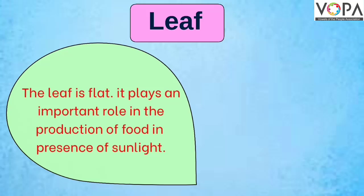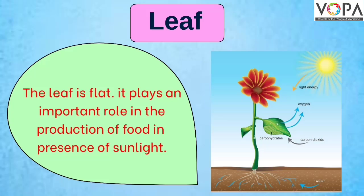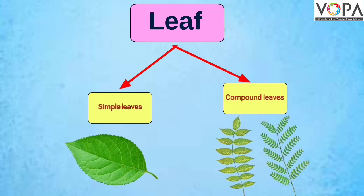The next part of the plant is leaf. The leaf is flat and it plays an important role in the production of food in the presence of sunlight and carbon dioxide. Leaves are mainly of two types: simple leaves and compound leaves.